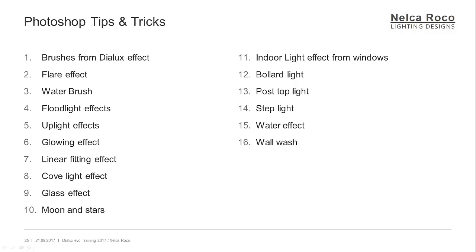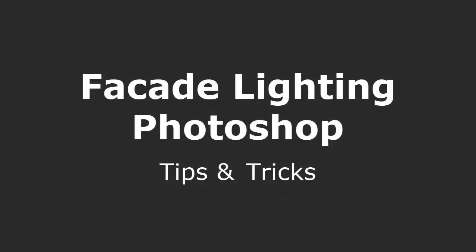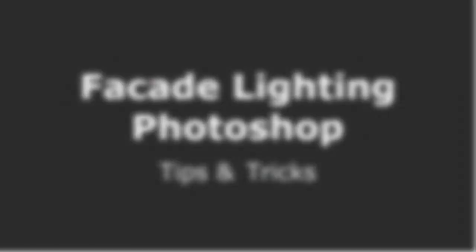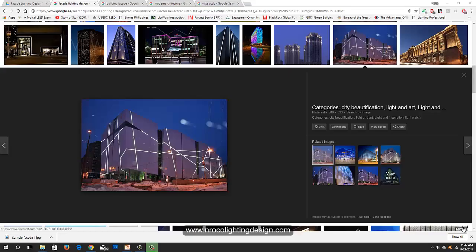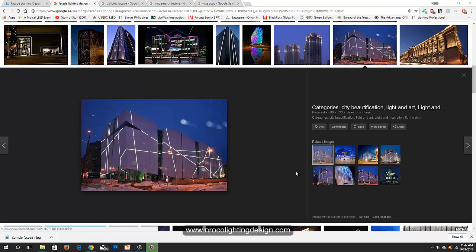Good morning everybody! Today is our Photoshop tips and tricks for facade lighting. We are working with tips number seven and number six: the glowing effect and the linear fitting. I have sample projects here and we're going to copy all of this effect in facade lighting — this is the actual installation.